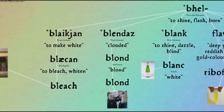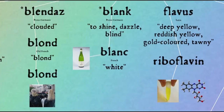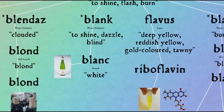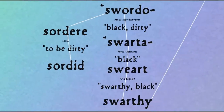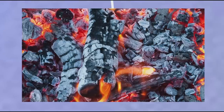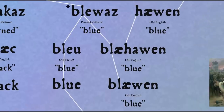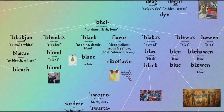Another word that descends from 'bhel' (to shine, flash, burn) — the root behind 'bleach' — is 'blonde', as well as the French colour term 'blanc' (white). So does the Latin word 'flavus', meaning deep yellow or gold-coloured, which comes into English in chemical terminology as 'riboflavin', the term for vitamin B2. But more surprising is that 'bhel' is also the root behind the word 'black', from Old English 'blæc'. Swart, and modern English 'swarthy', come from the root 'swerdho' meaning black, dirty — also the root behind 'sordid'. The sense development of 'bhel' to black is from burning, and thus bright, to burnt like coal, and thus dark. And what's more, another basic colour term from the root 'bhel' is 'blue', which comes into English through Old French 'bleu', replacing the native Old English word 'blawen'. So a lot of very different basic colour terms — blonde, white, black, blue — from the same root that means shiny.